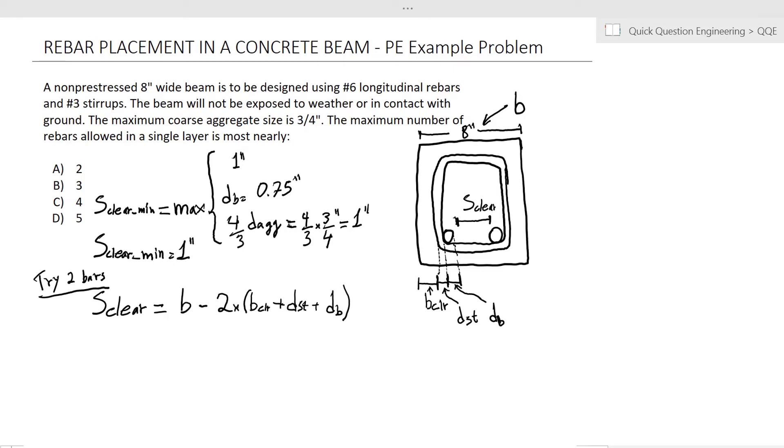So if we plug that clear cover in here, as well as the rebar diameter, which is 3/4 of an inch, and the stirrup diameter, which is 3/8 of an inch, we get the clear space as 2.75 inches. So we're well beyond the minimum spacing, so we can add another rebar and try this one more time.